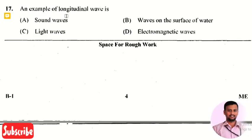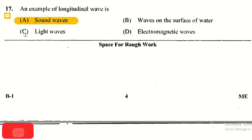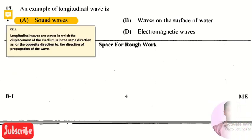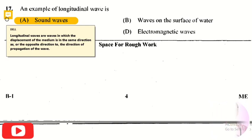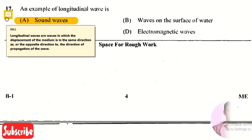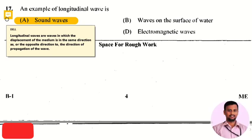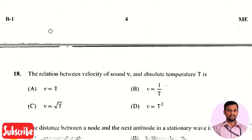The next question: an example of a longitudinal wave is? The right answer is option 1, sound waves. Longitudinal waves are waves in which the displacement of the medium is in the same direction as — or the opposite direction to — the direction of propagation. The best example of a longitudinal wave is sound waves.